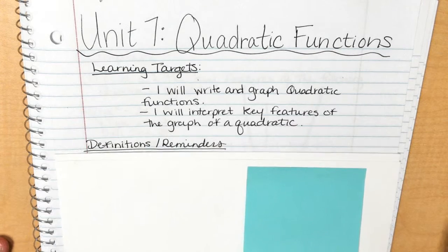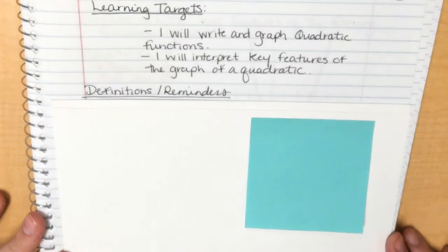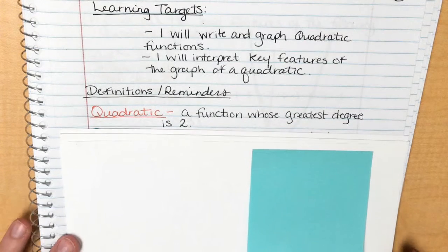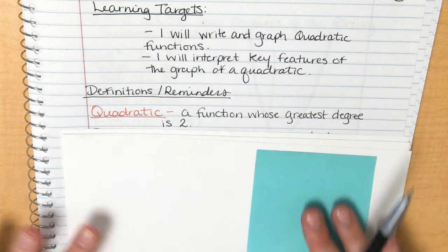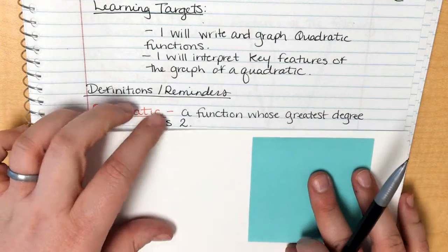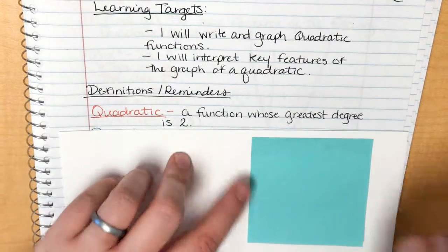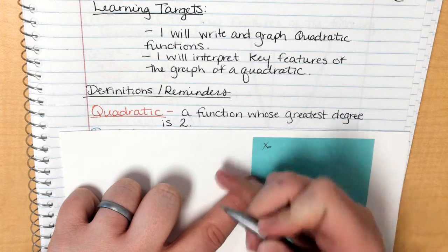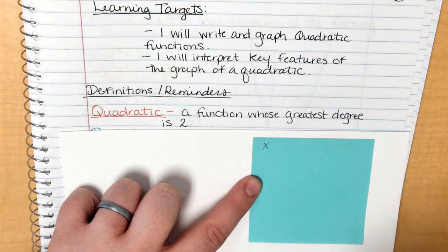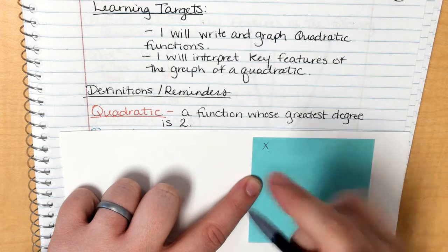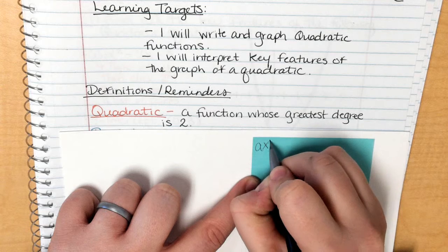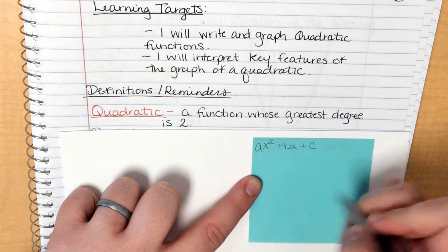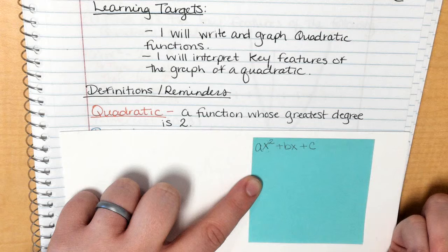We have a lot of definitions and reminders. The first one is what a quadratic function is. A quadratic function is a function whose greatest degree is 2. The standard form is ax squared plus bx plus c — this is a quadratic function.